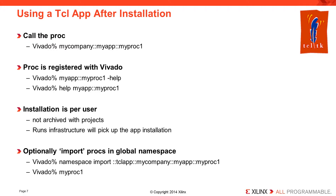Currently, each user has to install an app, but once this is done it is available for all of your sessions. This also includes runs that are launched, so you can use customized hook scripts that refer to app commands. Hook scripts are used to customize synthesis or implementation flows by inserting scripts into the defined steps of the flow. Also, if you know for certain that a proc name in a given app will not conflict with any other command, you can import it into the global namespace — essentially the top level of Tcl commands, called without the use of namespace qualifiers.